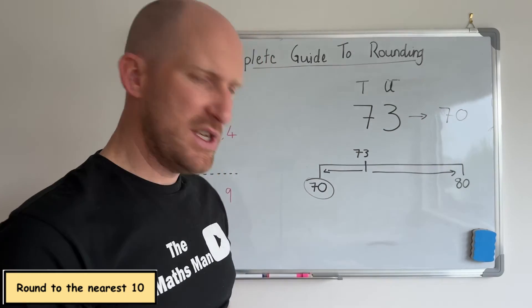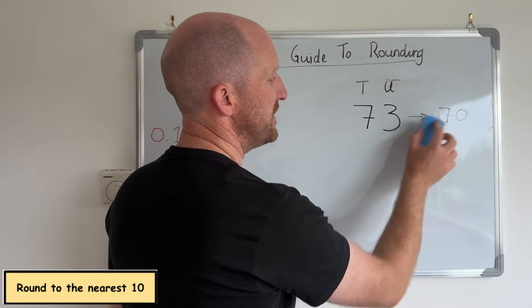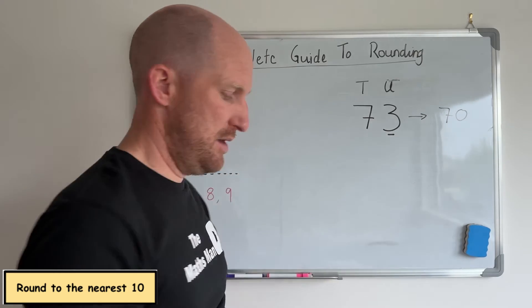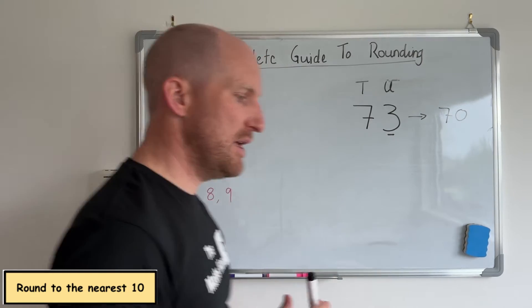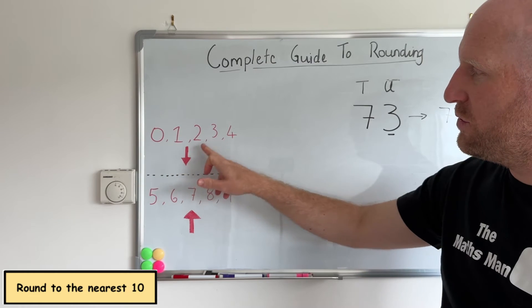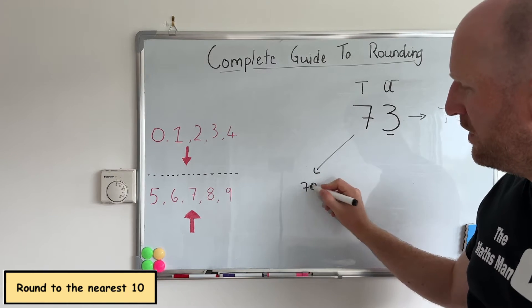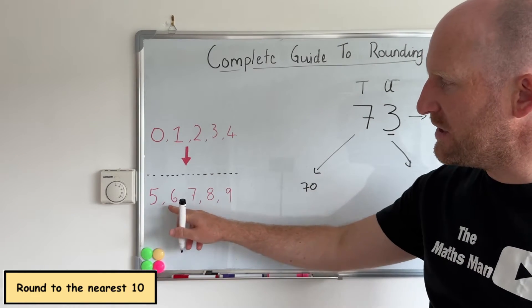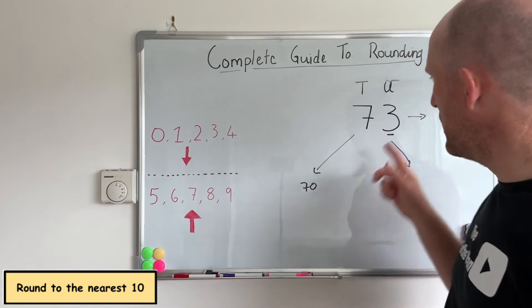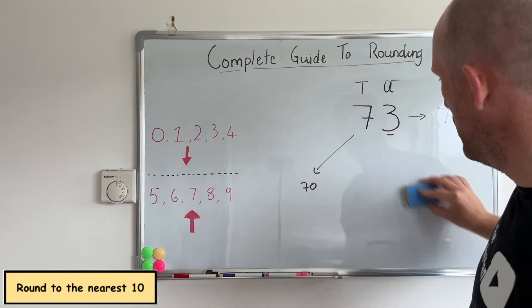But what if you didn't use a number line? That's where we look at the units digit. The units digit here is a 3, and we have this rule when rounding: if the unit is 0, 1, 2, 3, or 4, we round down — so we round down to 70. If the unit is 5, 6, 7, 8, or 9, we round up to 80. In this example, the unit is a 3, so we round down to 70.